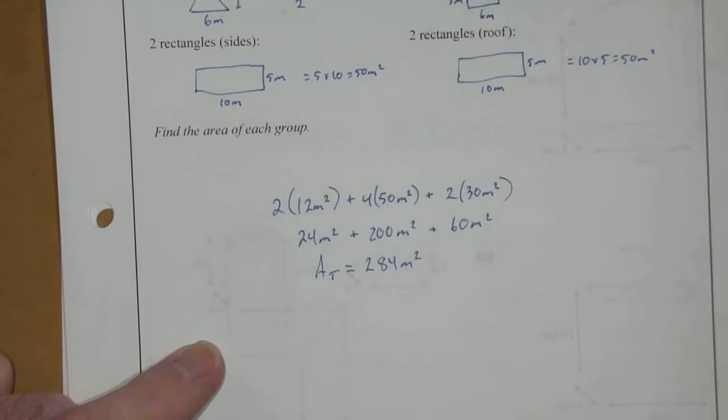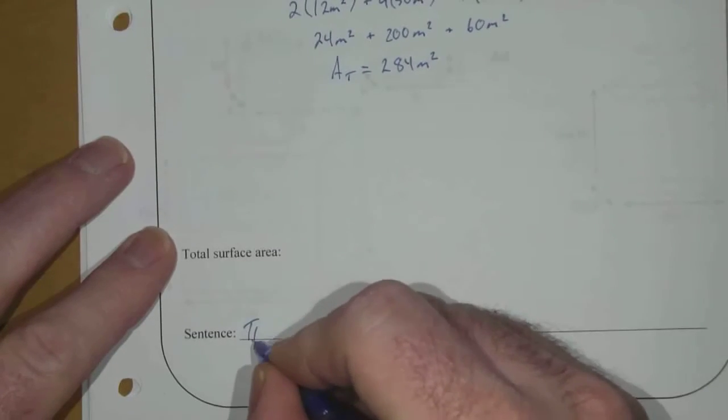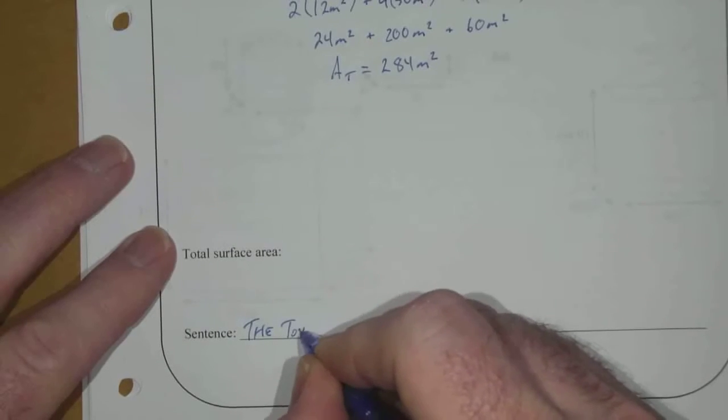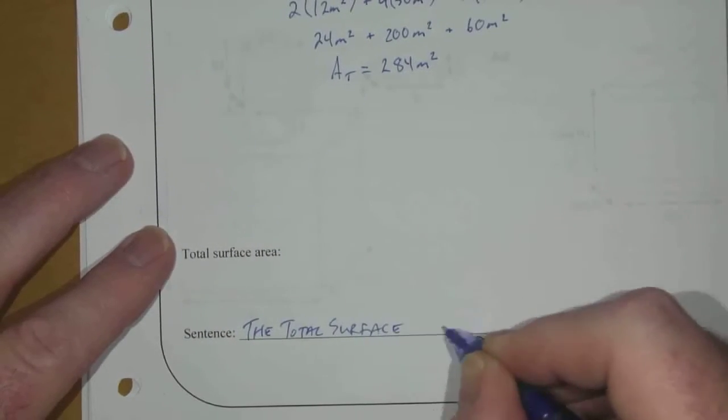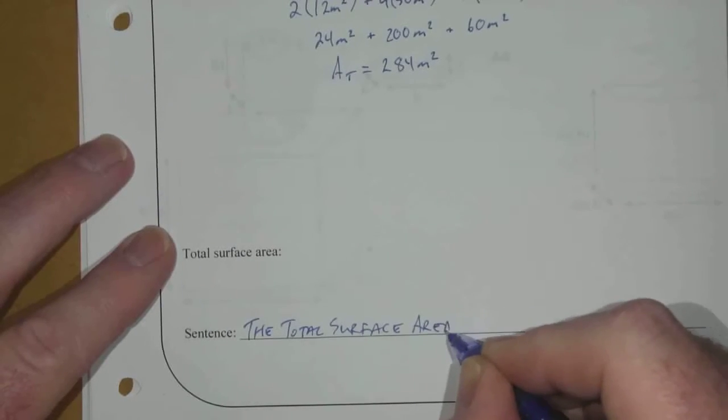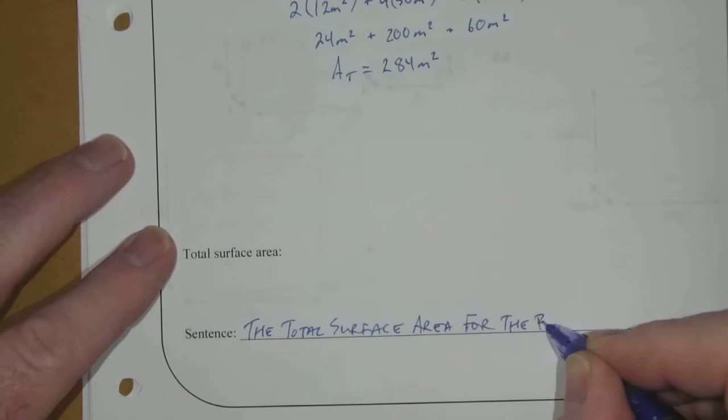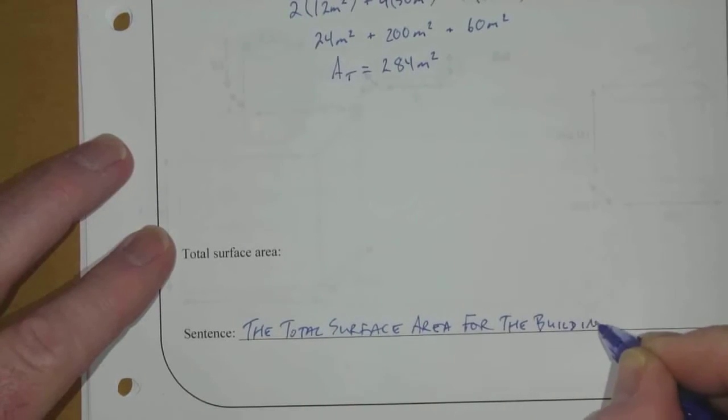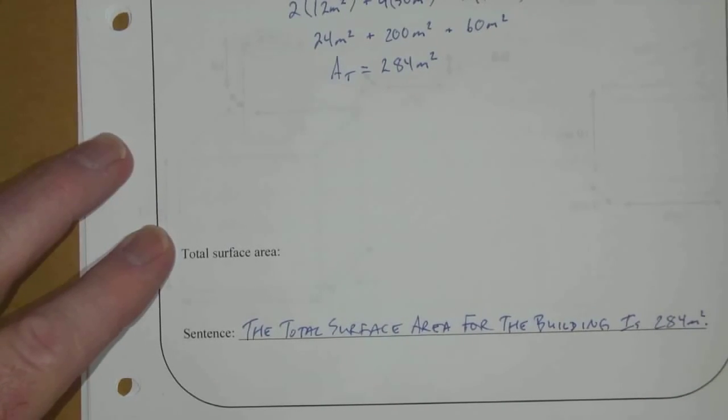284 should be your answer, so the total surface area for the building is 284 meters squared. So that is your solution for the show you know.